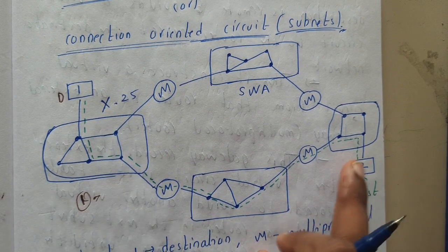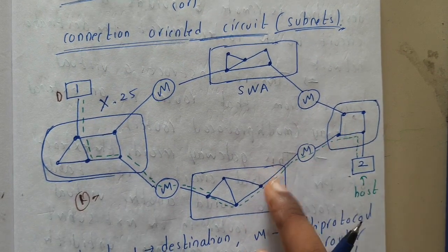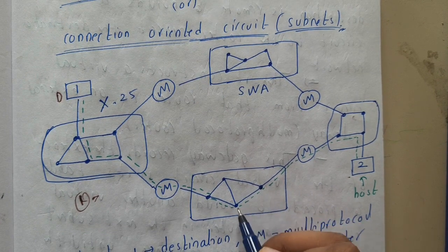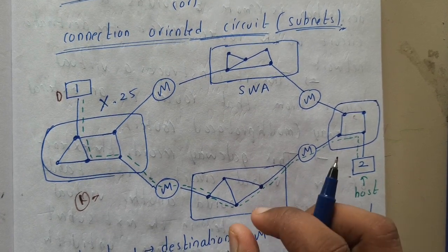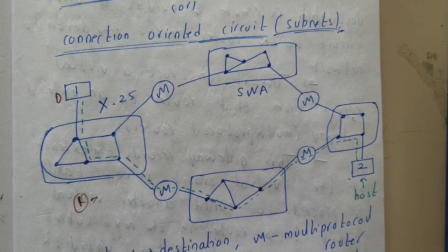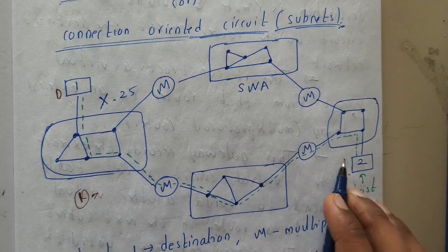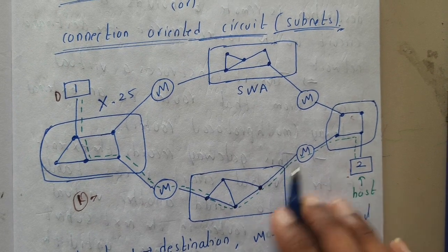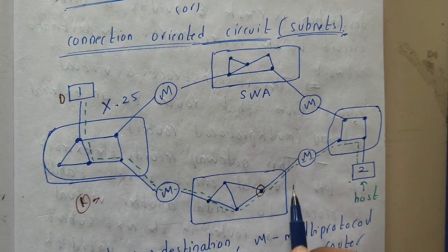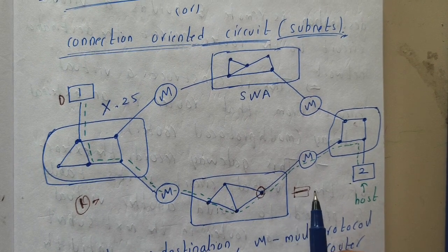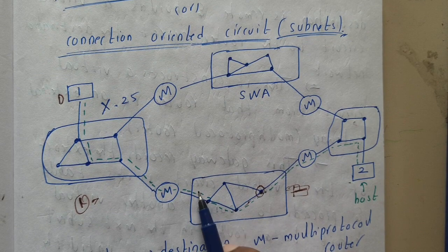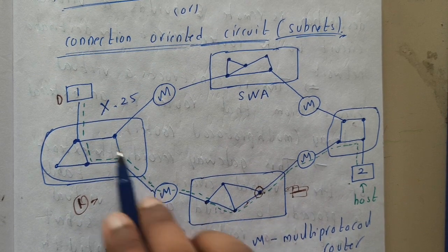Once data transmission starts, each networking node — a computer or system — has a routing table. Inside that table, the established link is recorded, so the node knows where to send each particular packet. Every packet has an address, and based on that address, it is routed toward the destination.